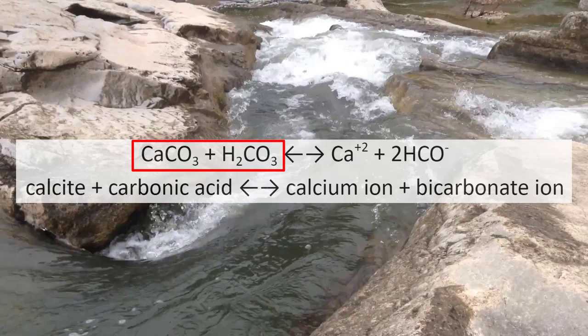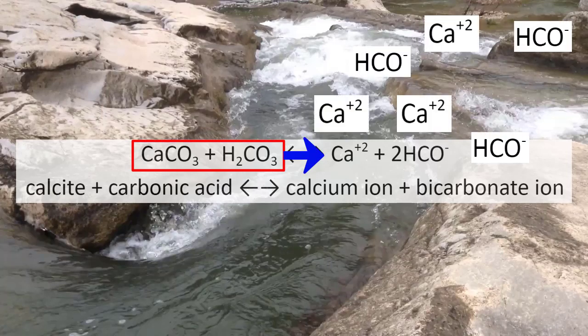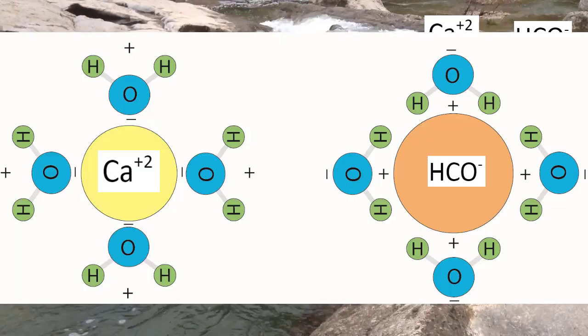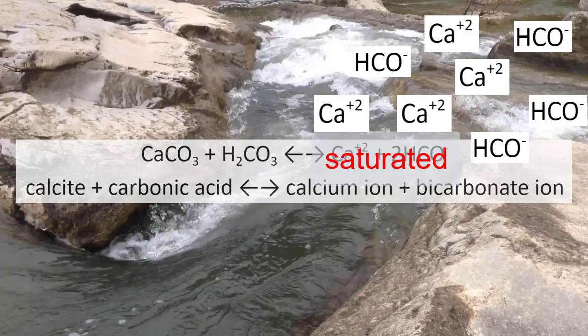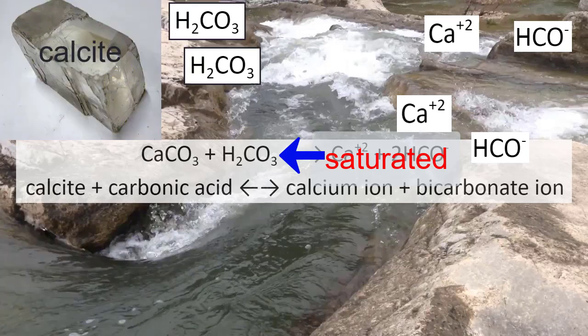When water first comes in contact with calcite, dissolution occurs, but eventually the water becomes saturated with the calcium and bicarbonate ions — the water molecules are surrounding too many of them and can't hold anymore. We say the water is saturated with dissolved calcium and bicarbonate. Remember that we have a system in equilibrium. So when we're at saturation point, if we later change any of the ingredients or conditions, we can push the reaction in the opposite direction to undo that change. Instead of dissolving calcite, we move to the left and the calcite mineral precipitates.